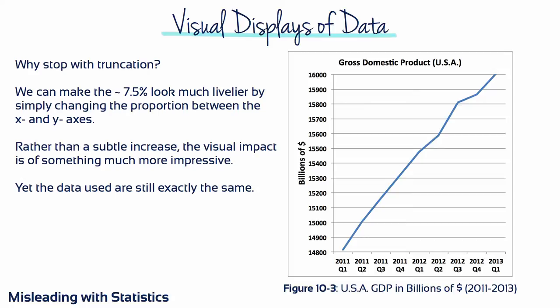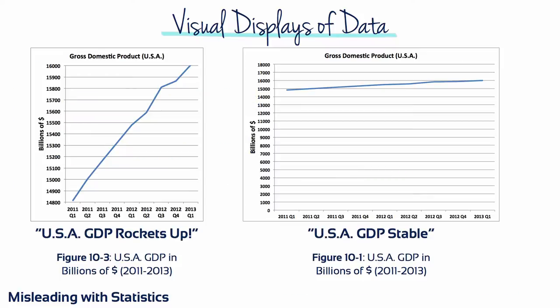Why stop with truncation? We can make the 7.5% look much livelier by simply changing the proportion between the X and Y-axis. Rather than a subtle increase, the visual impact of Figure 10-3 is of something much more impressive, yet the data used are still exactly the same. The visual representation of exactly the same numbers can be manipulated to give the impression that GDP has soared impressively in just over two years, or that GDP has remained relatively stable in just over two years.